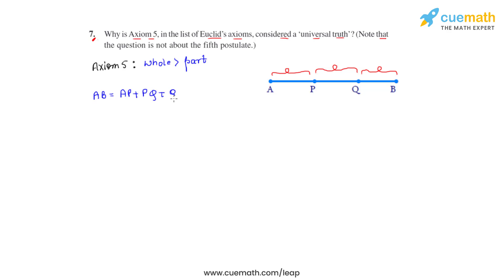So from this we can conclude that AB is greater than AP, AB is greater than PQ, and AB is also greater than QB.